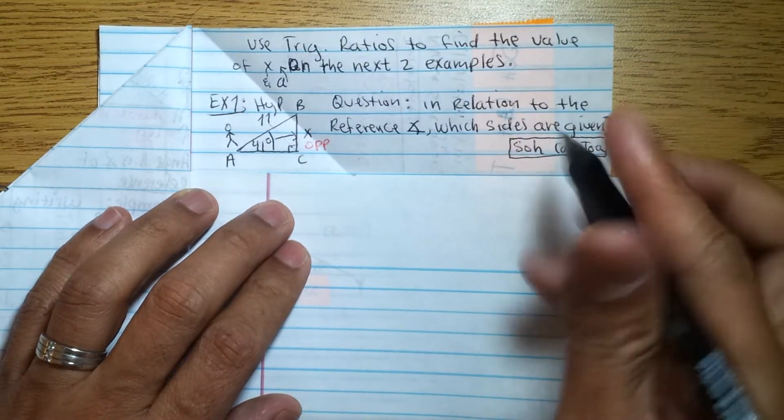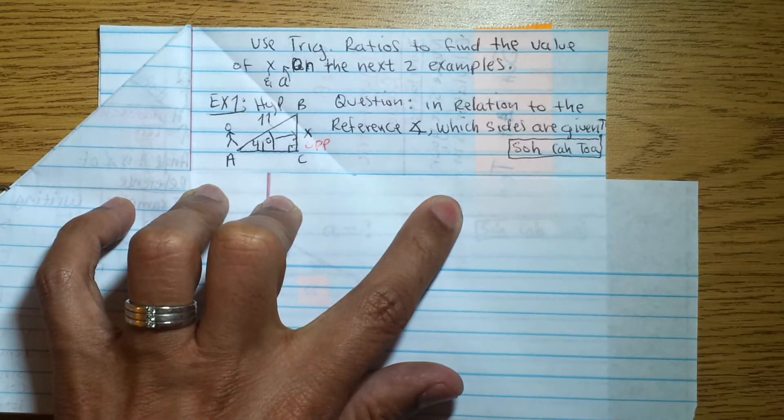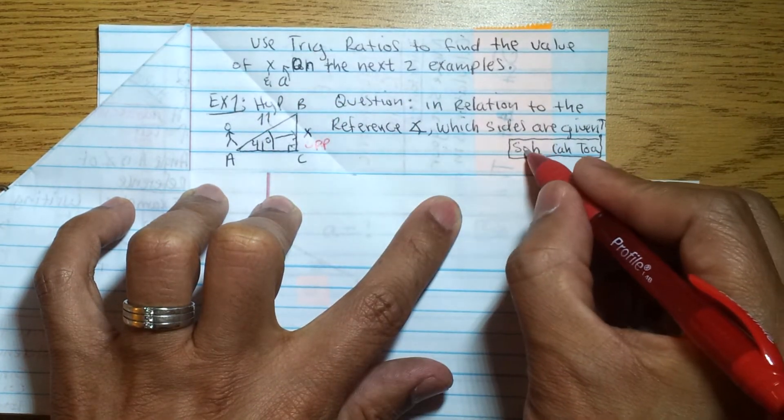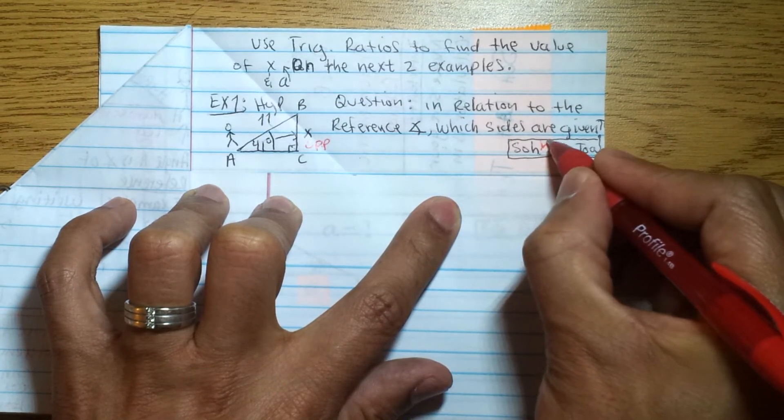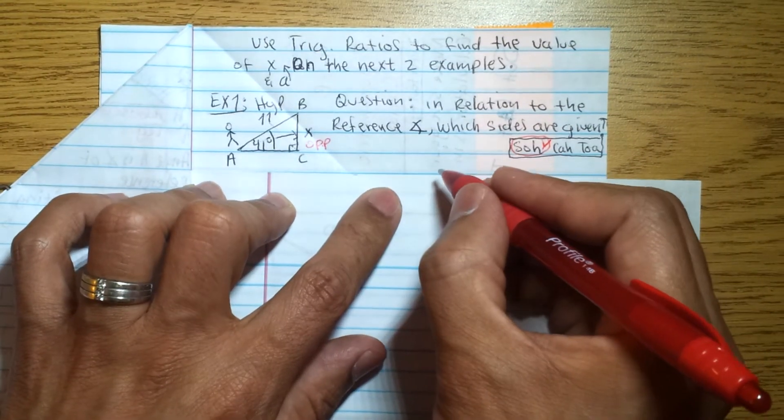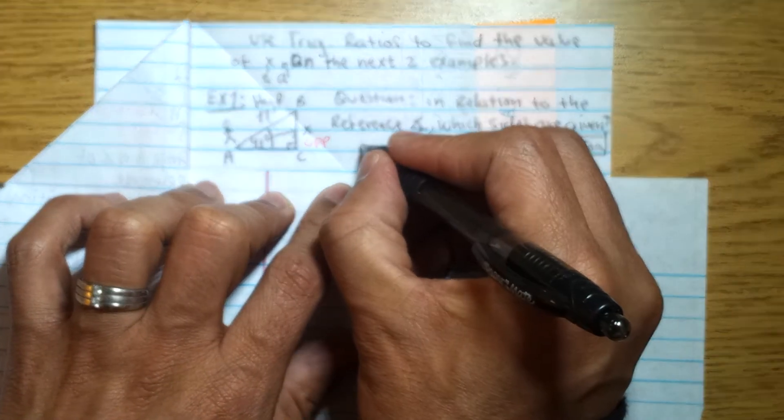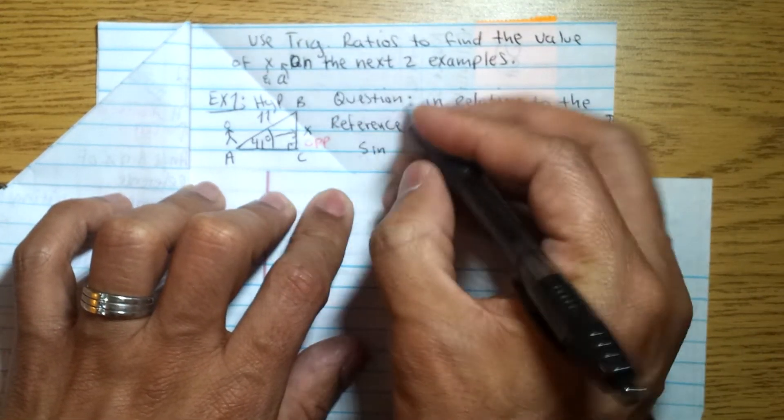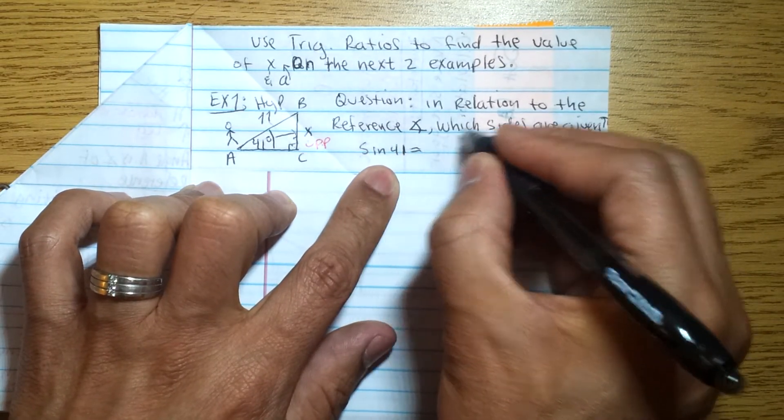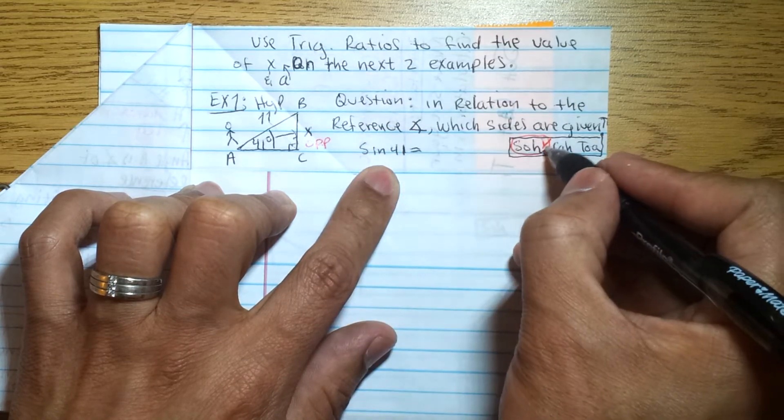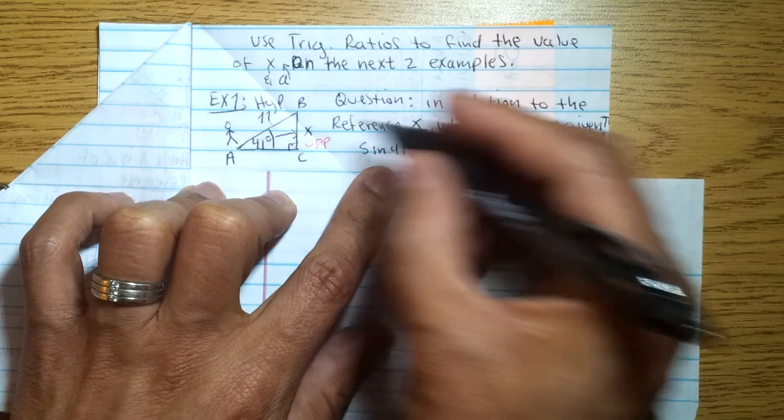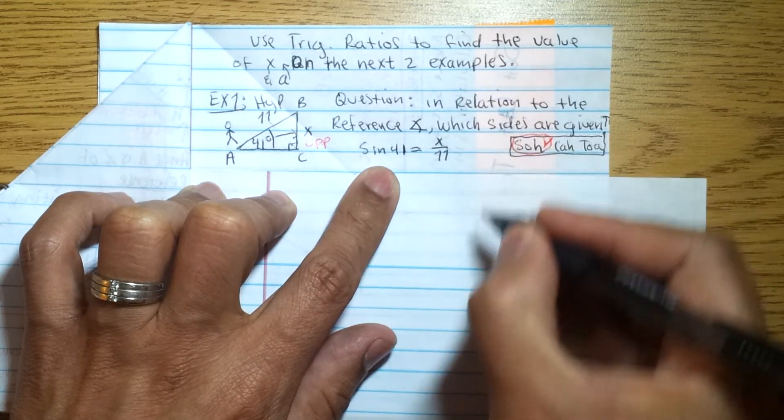I wrote this here just to help us see which one we're going to use. So we have opposite and hypotenuse. Opposite and hypotenuse, that means we're going to use sine. If what we have is opposite and hypotenuse, we have to use sine, so then we set up the proportion, which says that sine of the angle, sine of angle A, which is 41 degrees—we have an angle measure—equals opposite over hypotenuse. The opposite is X, so X goes on top and hypotenuse goes on the bottom, so X over 11.